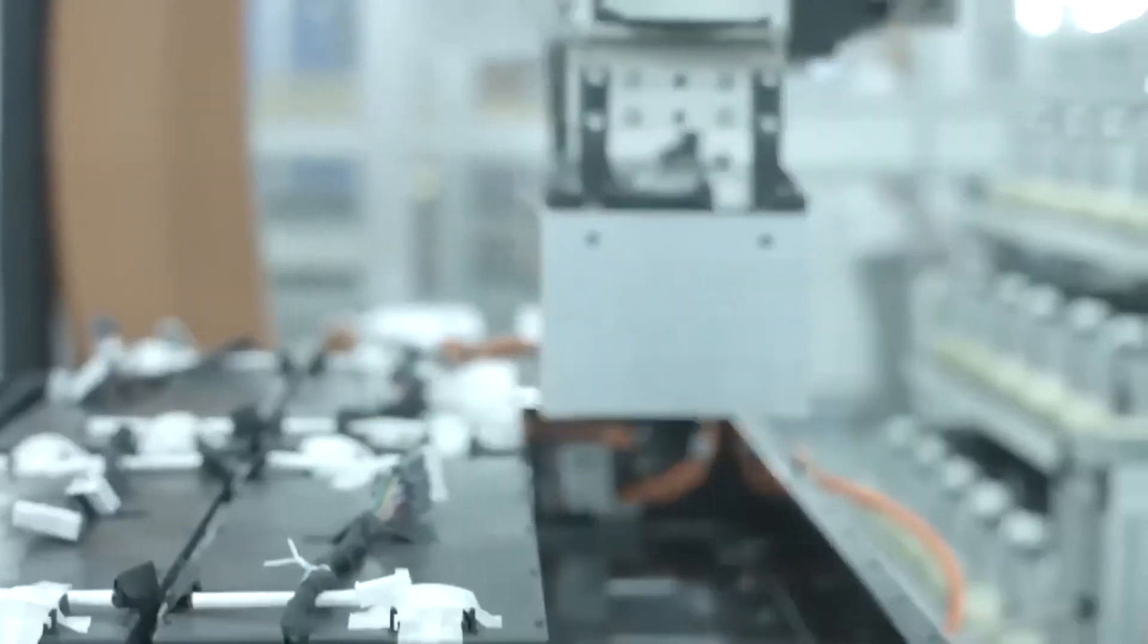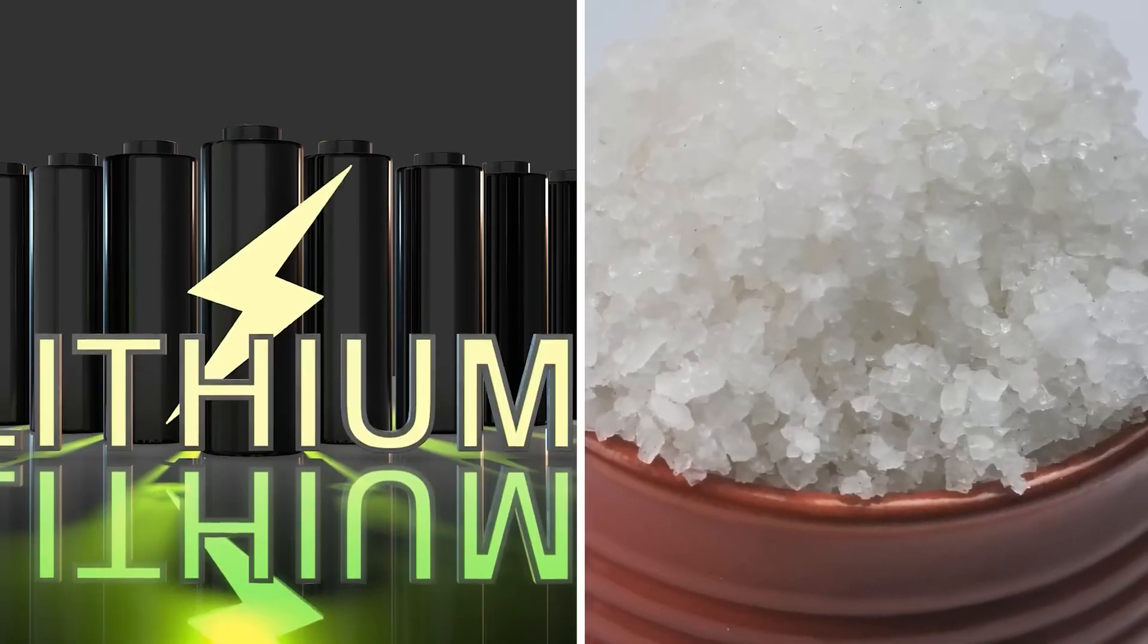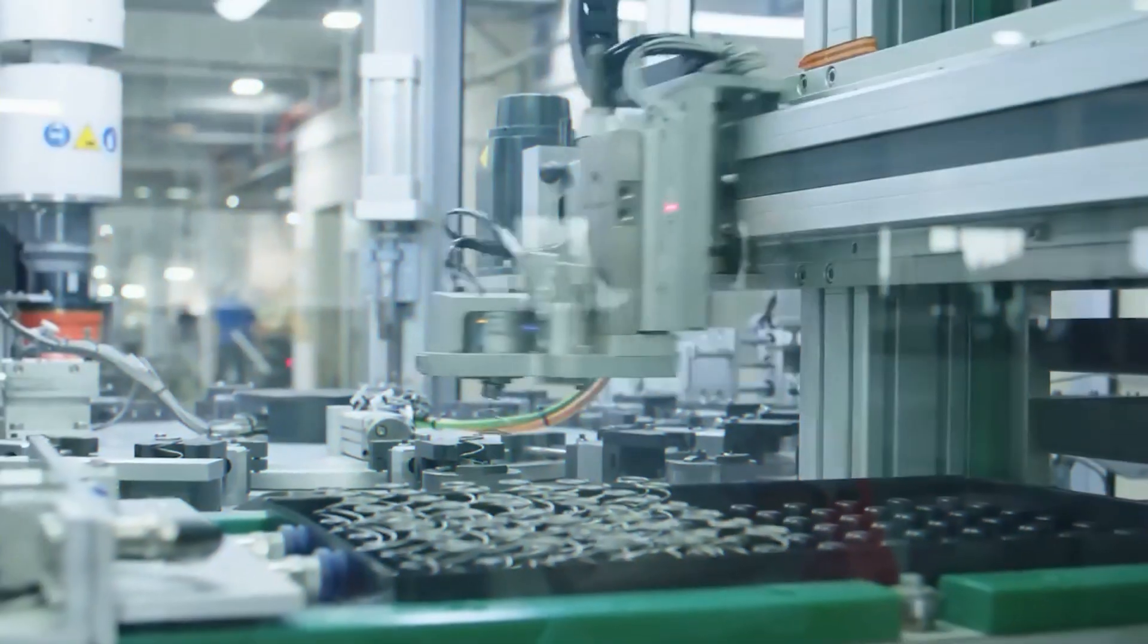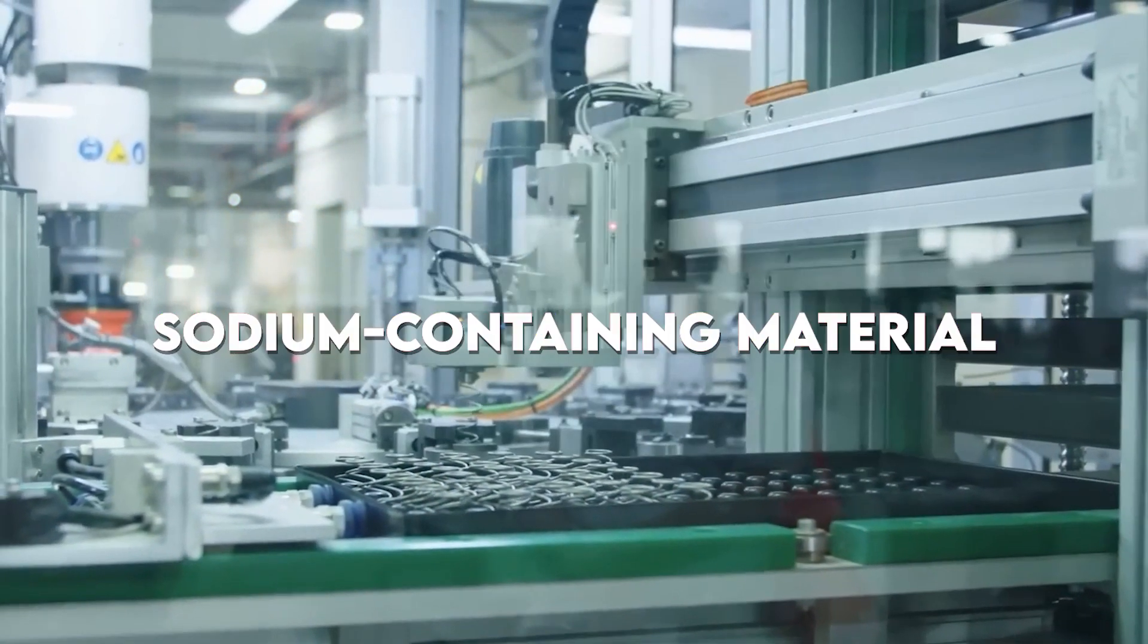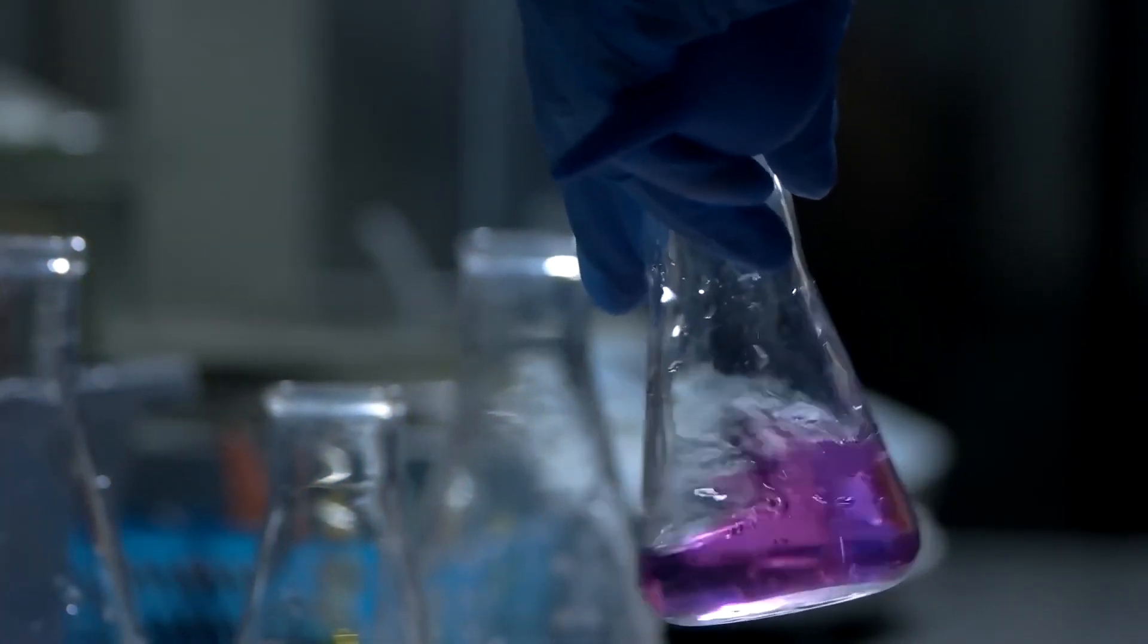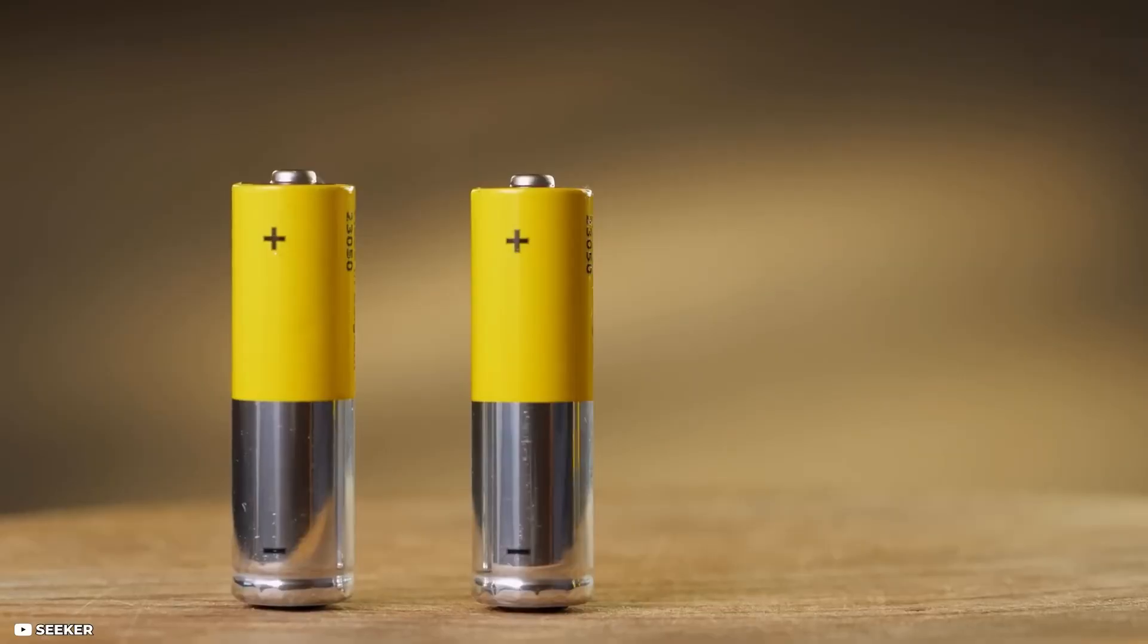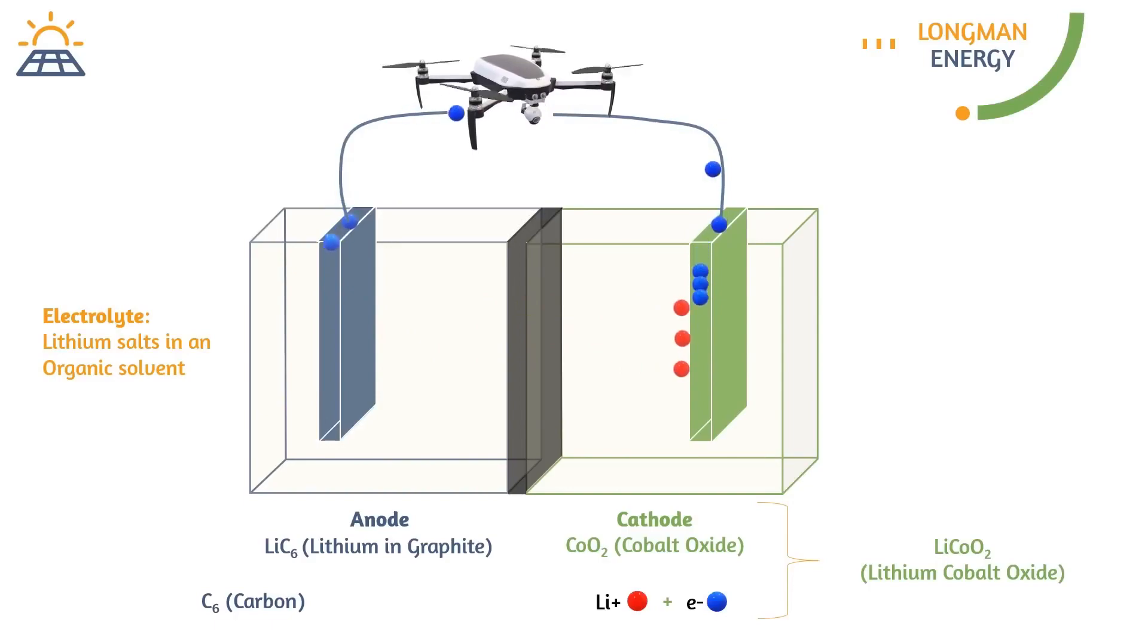Just like any other battery, a sodium-ion battery also comprises an anode, a cathode, and an electrolyte. Sodium-ion battery cells consist of a cathode made up of a sodium-containing material, an anode which is not necessarily a sodium-based material, and a liquid electrolyte containing dissociated sodium salts in polar protic or aprotic solvents.